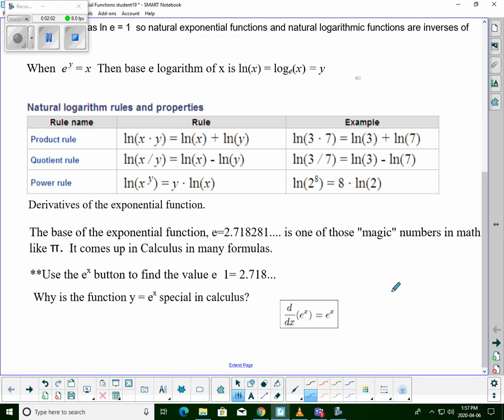So one of the things why this is special in calculus is that if we take the derivative of e to the x, it is e to the x. So basically, if you had a graph of it, and you found the slope at any point on this curve, it would be e to the x. And that's really neat.